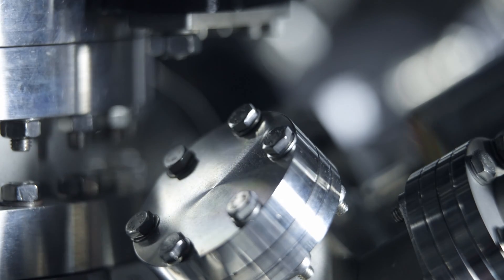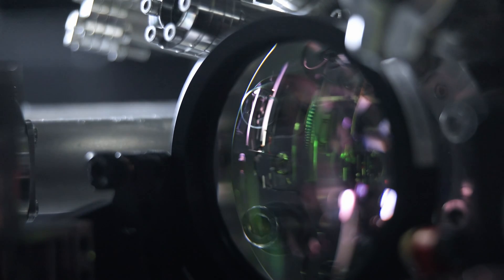EUV light or extreme ultraviolet light is used to make the most modern chips that are in your smartphone and in the computers these days. The wavelength is so small you can also print very small features and those features then tend to be the smartest and most efficient.